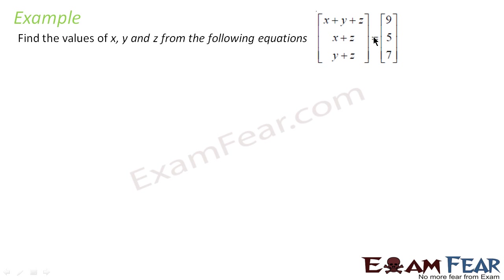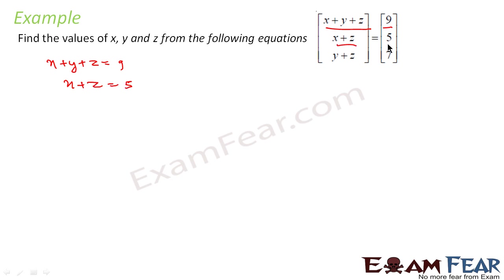We will take one more example. Both matrices are equal. We can form these equations: x + y + z = 9, x + z = 5, and y + z = 7, by comparing the corresponding elements of the two equal matrices.